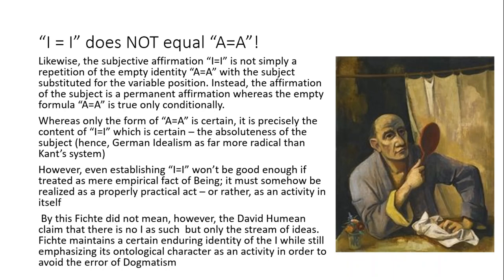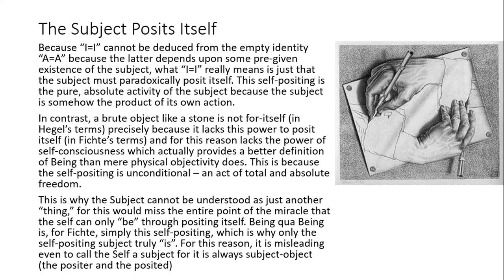However, even establishing I equals I will not be good enough if this is treated as a mere empirical fact of being. It must somehow be realized as a properly practical act, or rather as an activity in itself. By this, Fichte did not mean the Humean claim that there is no I as such — there's only a stream of ideas. Fichte maintains a certain enduring identity of the I, while still emphasizing its ontological character as an activity, and he does this in order to avoid the error of dogmatism, which would make subjective freedom impossible. What I equals I really means is just that the subject must paradoxically posit itself. This self-positing is the pure, absolute activity of the subject, because the subject is somehow the product of its own action.